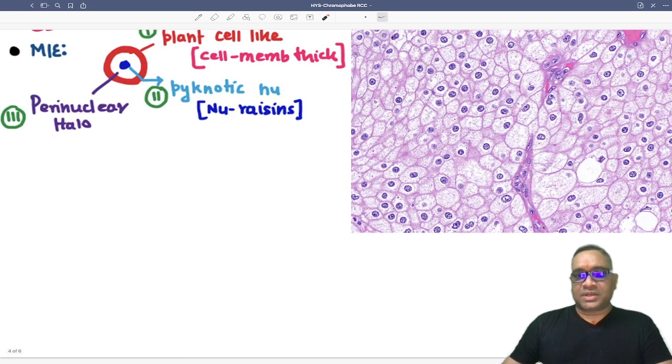And on microscopic examination, as I said, three characteristic findings. Plant cell-like tumor cells. You can see the cell membrane is quite thick. That is why it is called plant cell-like tumor cells.